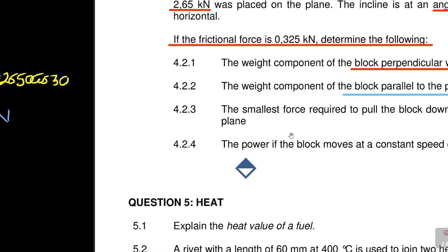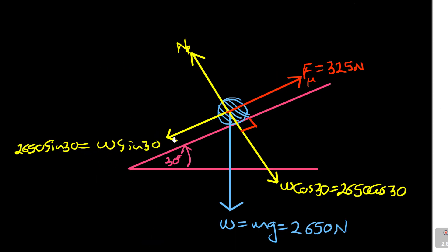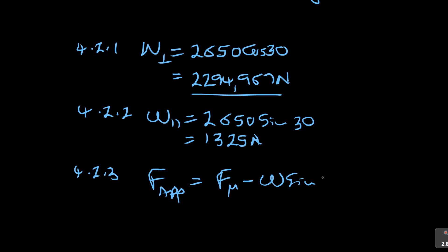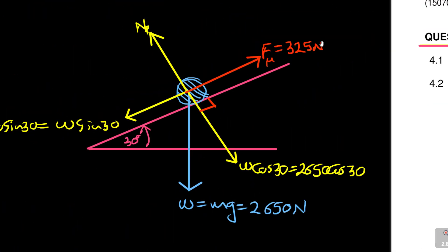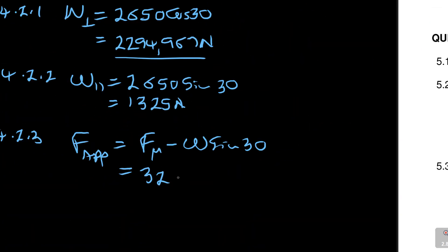Then 4.2.3: the smallest force required to pull the block downwards along the plane. There are two forces along the plane: W sin 30 and friction F. So F applied equals the upward force (friction) minus W sin 30 downward. Friction going up is positive, going down is negative. So it's 325 minus 1,325.